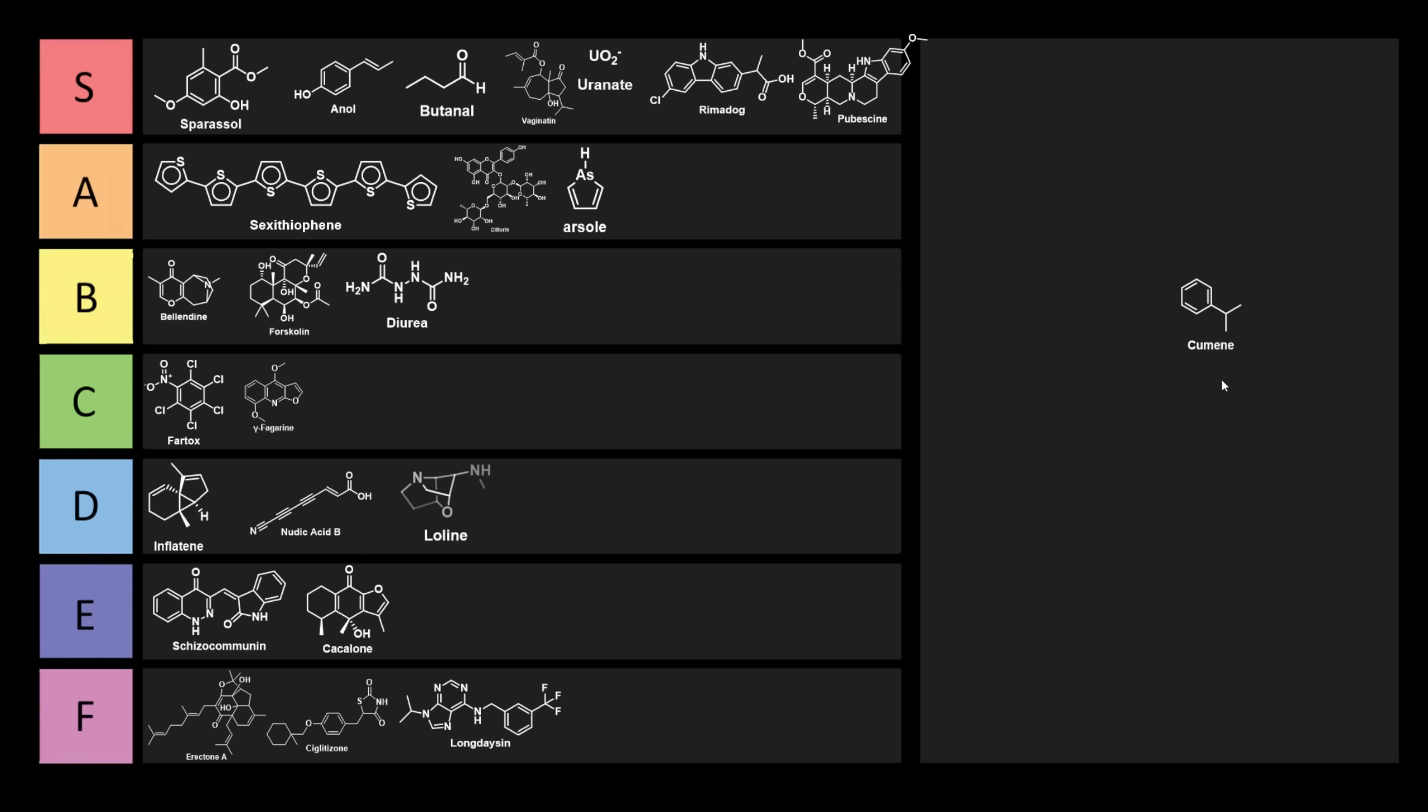So cumene, it's actually a really important molecule. It's used in the global production of acetone and phenol through something called the cumene process. If you haven't looked into the cumene process, I'd encourage you to check it out. So cumene is another S-tier molecule, and it's just so funny. If you want to see more tier lists like this in the future, make sure you subscribe and click that bell, and I hope you have a great day.